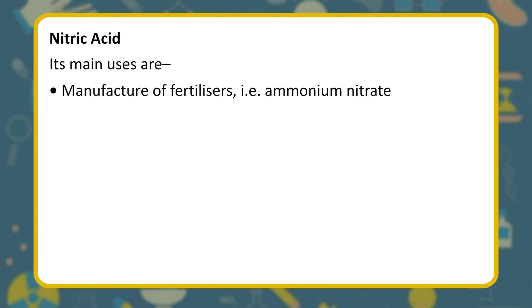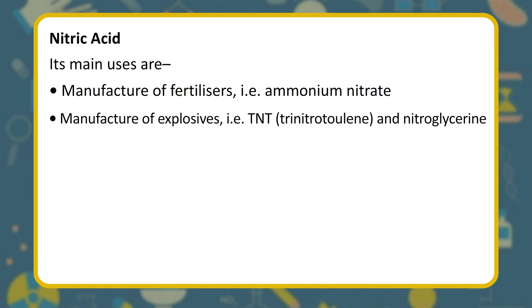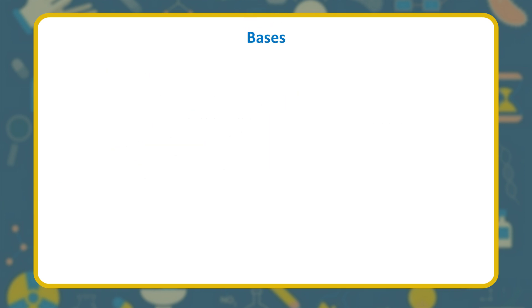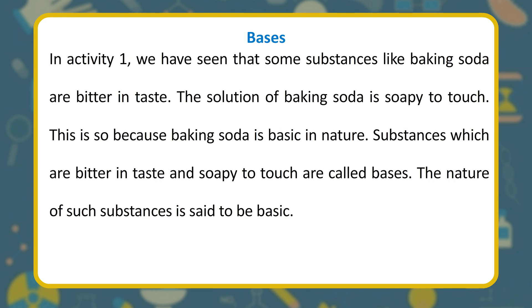Nitric acid — its main uses are: manufacture of fertilizers such as ammonium nitrate; manufacture of explosives such as TNT (trinitrotoluene) and nitroglycerin; preparation of aqua regia; in extraction of some metals from their ores; and in purification of silver and gold.